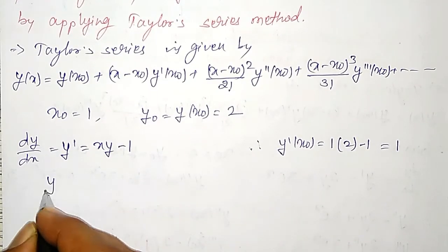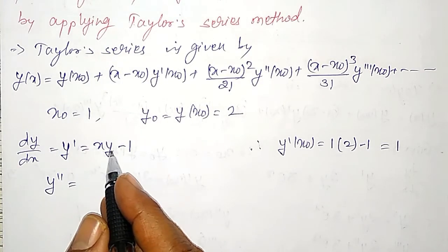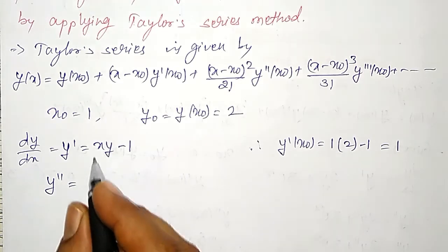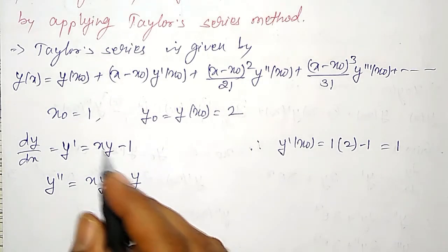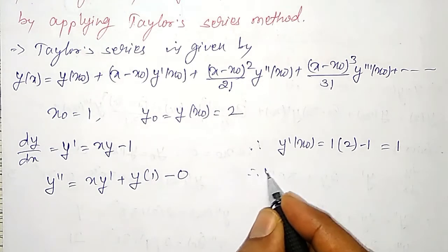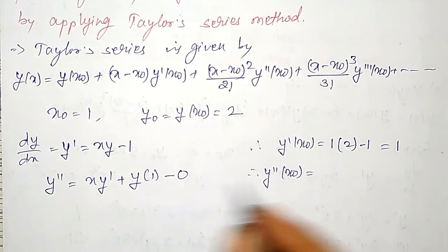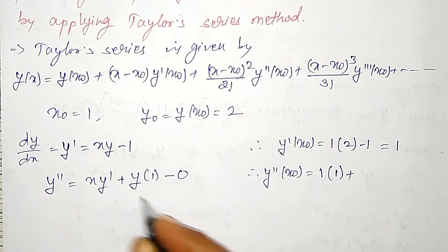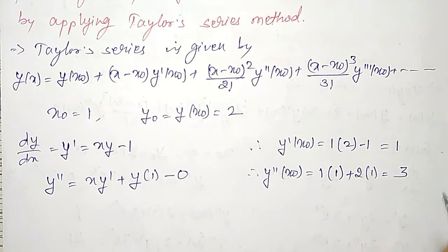To find y double dash, differentiate again. Using the product rule for x·y, since y is a function of x: y'' = x·y' + y·1 − 0. Therefore y''(x₀) = x₀·y'(x₀) + y₀ = 1·1 + 2 = 3.